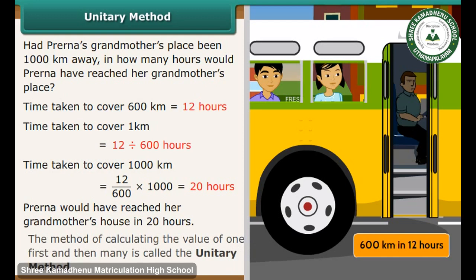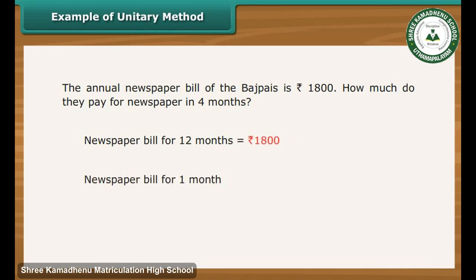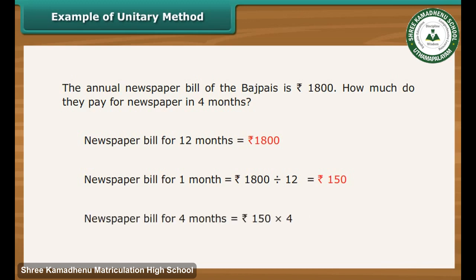The method of calculating the value of 1 first and then many is called the unitary method. For example, the annual newspaper bill of a family is Rs. 1800. How much do they pay for newspaper in 4 months? Newspaper bill for 12 months is Rs. 1800, so bill for 1 month is Rs. 1800 by 12, that is Rs. 150. Newspaper bill for 4 months is Rs. 150 into 4, which equals Rs. 600.